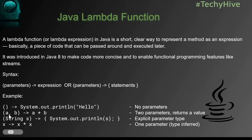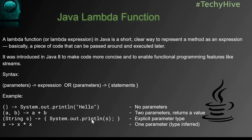In another example, parameters a and b are passed and used in the expression. These two parameters are inferred automatically by the JVM, and since it's a single-line expression there's no bracket — it returns a value. You can also specify an explicit parameter type. And here we have one statement with curly brackets to allow more than one statement. The last example, x equals x times x, is a simple single-parameter lambda where the type is inferred.